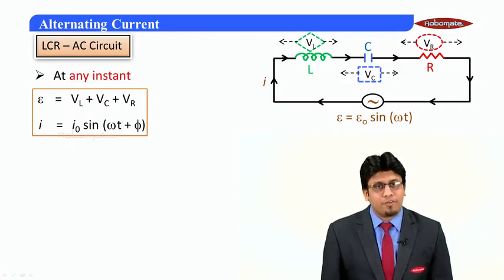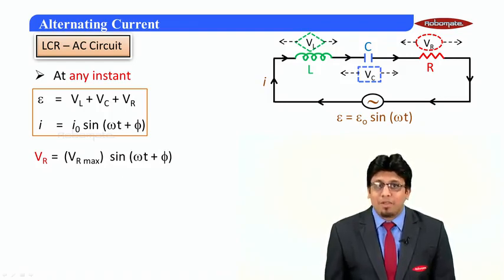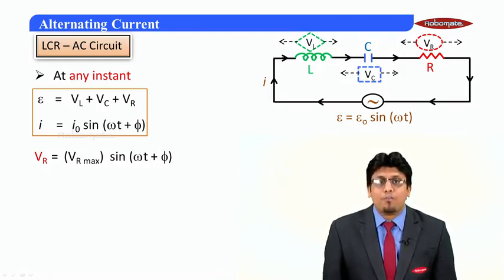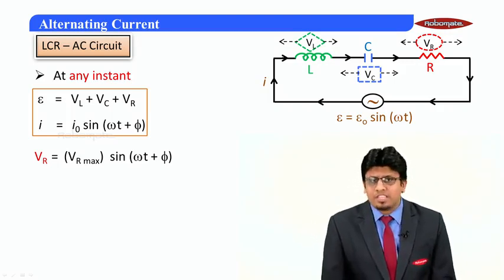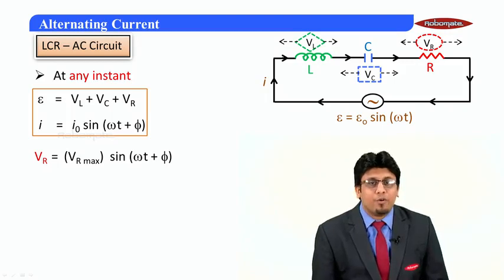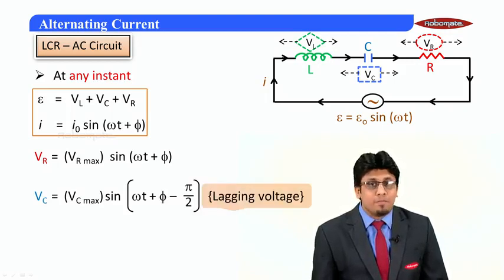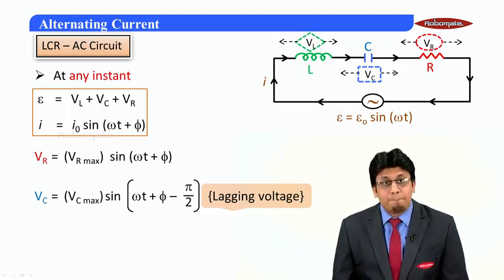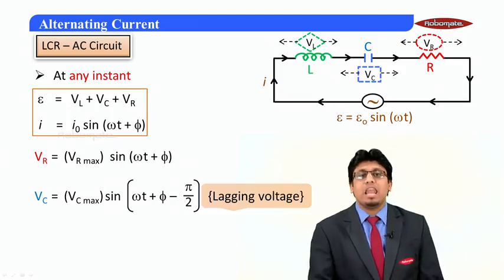Now if we take current as the reference, nothing happens to the EMF for a resistor because for a resistor the EMF and the current are in same phase. But in case of a capacitor, the current actually leads the EMF, and therefore we can say that EMF or the voltage actually lags behind the current. And therefore in case of a capacitor we can write VC is equal to the maximum value multiplied by sin(ωt + φ - π/2), since the current leads or with respect to current the voltage lags behind.